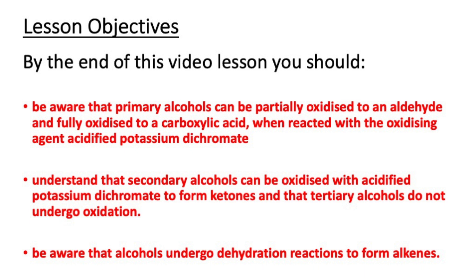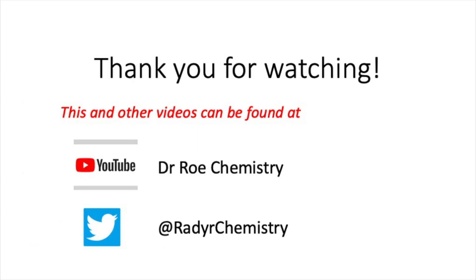That concludes this video lesson. After watching this video you should now be aware that primary alcohols can be partially oxidised to an aldehyde and fully oxidised to a carboxylic acid when reacted with acidified potassium dichromate. You should also understand that secondary alcohols can be oxidised with acidified potassium dichromate to form ketones, and that tertiary alcohols do not undergo oxidation. Finally, alcohols undergo dehydration reactions to form alkenes. Please check out our YouTube channel Dr. Rho Chemistry and our Twitter site at Radachemistry.